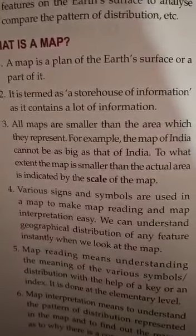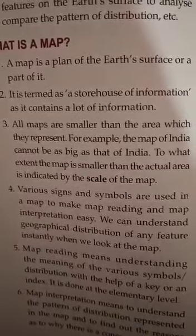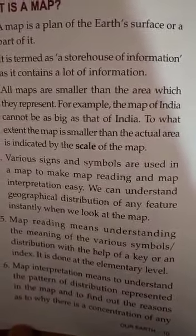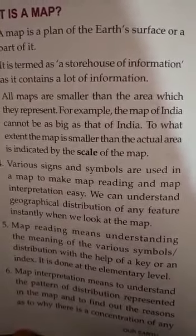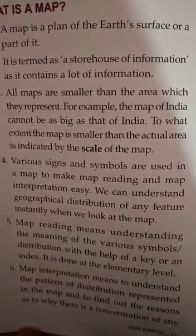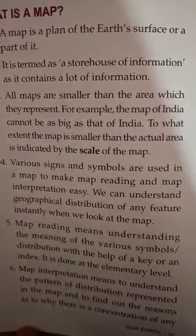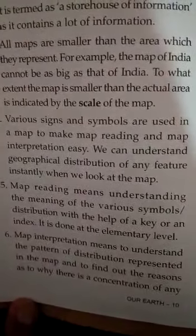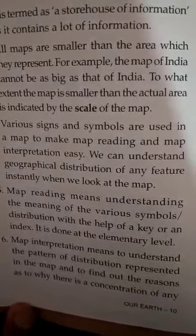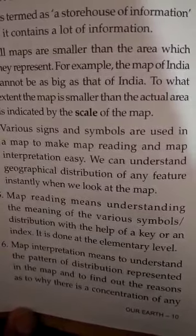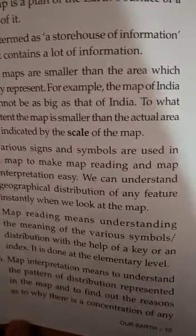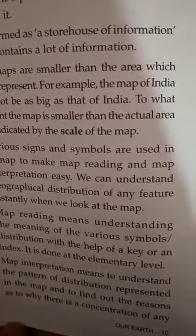That means we need a scale for the map. We also use different types of signs and symbols on a map so that it becomes easy to read and interpret. We can understand the geographical distribution of any feature when we look at the map. Map reading means understanding the meaning of the various symbols given on a map. Since not all of us are familiar with the symbols, a key or index is also given beside a map.